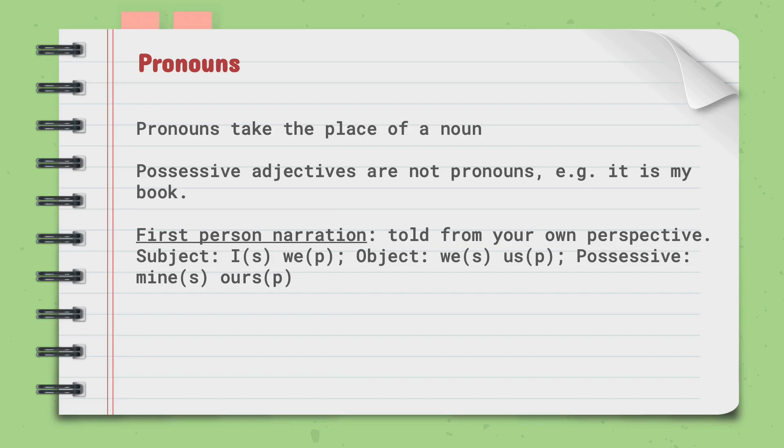In first person narration, which is told from your own perspective, a subject can be I, which is singular, or we, which is plural. The object can be me, singular, or us, plural. Possessive would be mine, singular, and ours, plural.